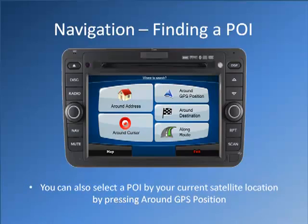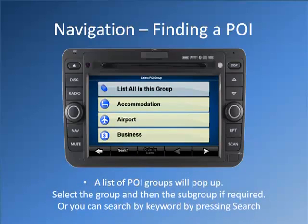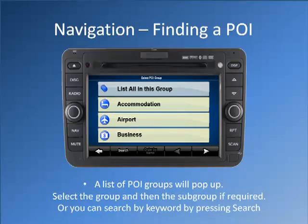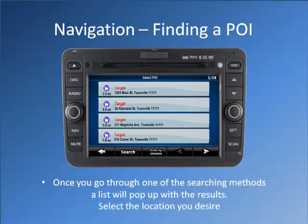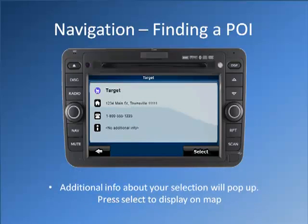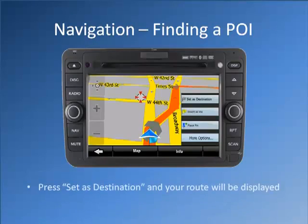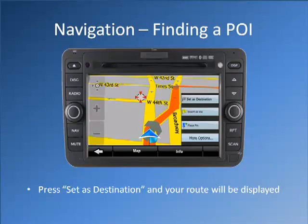You can also select a point of interest by your current satellite location by pressing Around GPS Position. A list of point of interest groups will pop up. Select the group and then the subgroup if required, or you can search by keyword by pressing Search. Once you go through one of the searching methods, a list will pop up with the results. Select the location you desire. Additional information about your selection will pop up. Press Select to display on map. Press Set as Destination and your route will be displayed.